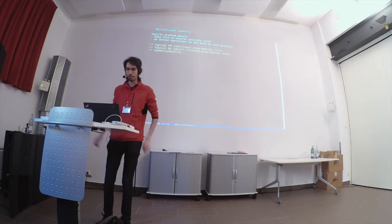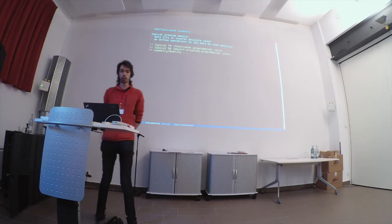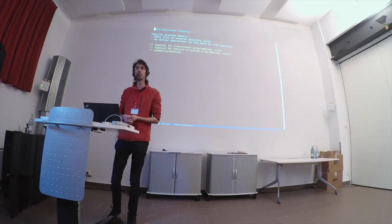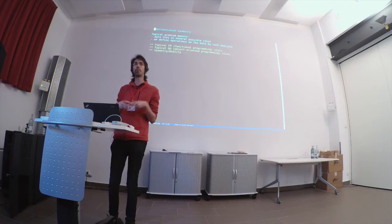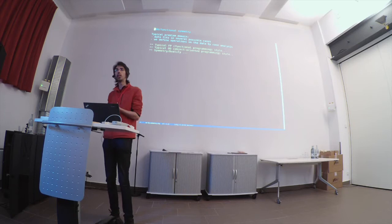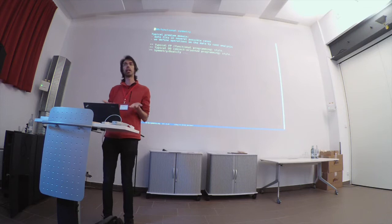Today I'm going to talk about a symmetry between object-oriented and functional programming styles. I'll talk about a very simple thing that occurs in many typical problem domains: data that fits in several possible cases. For example, the data is an address and maybe some people provide a phone number and others an email address. Then you define operations on your domain, and often these operations are defined by case analysis — if you want to contact a person, it depends on whether you reach them by phone or by email.